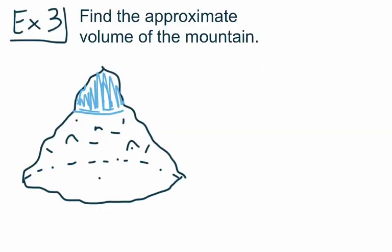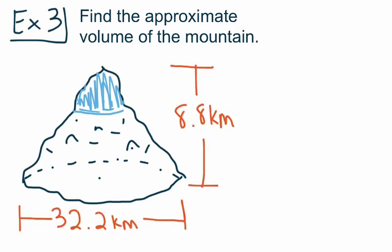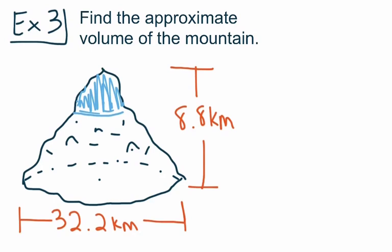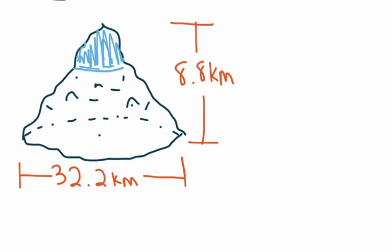For our third and final example, we're told to find the approximate volume of a mountain — specifically Mount Everest, one of the tallest mountains on Earth. It has a height of 8.8 kilometers and a diameter of 32.2 kilometers for the base. Since the diameter is 32.2 kilometers, the radius is 16.1 kilometers. We'll use that along with the height to find the total volume.